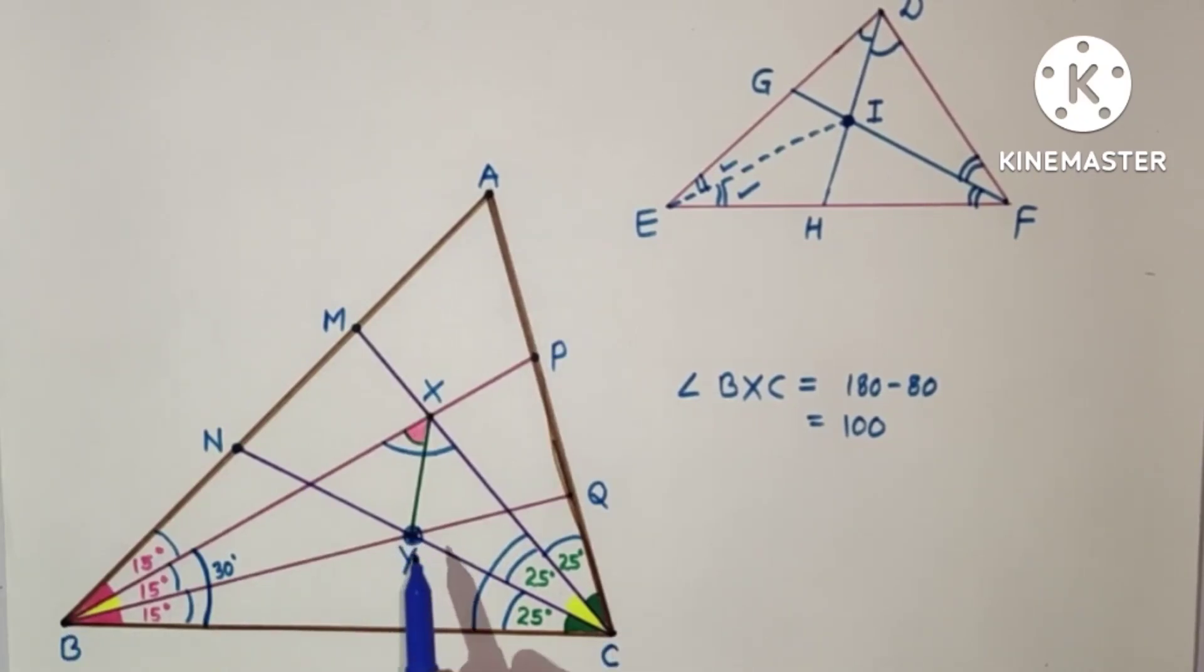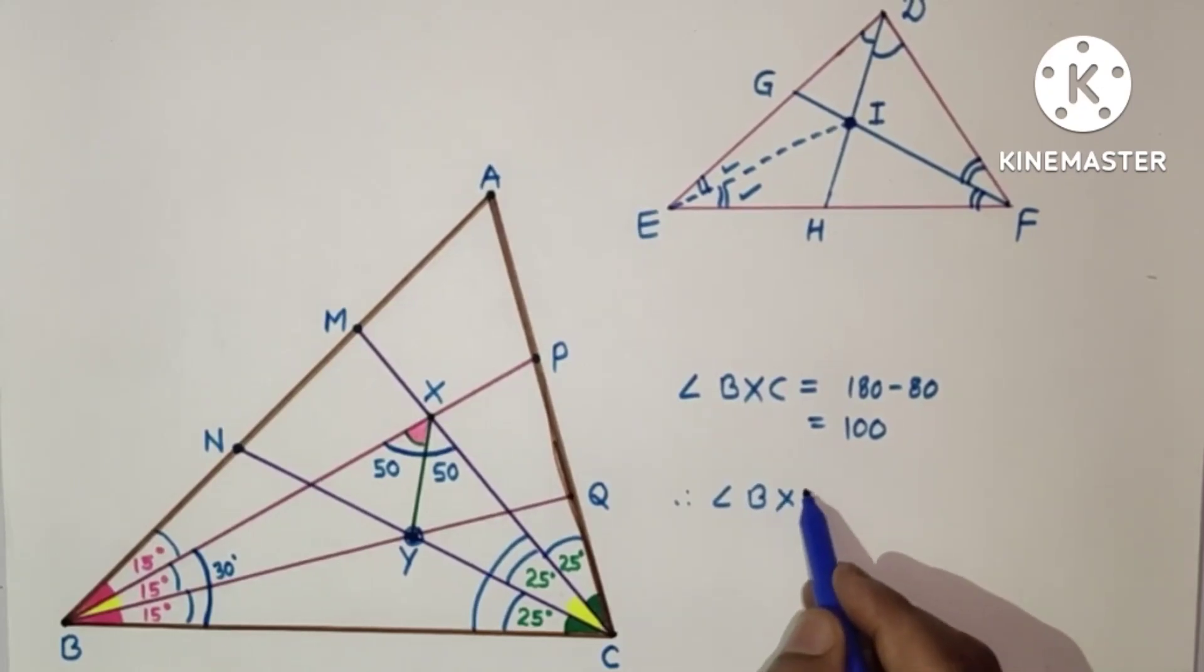This is BY bisector, CY bisector. This is the incenter point of intersection. If we join this vertex from this, this XY will also be the angle bisector of angle BXC. So here this is 100 and this XY bisects this 100, so this angle will be 50. So angle BXY therefore will be 50 degrees. And that is the answer.